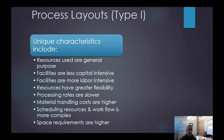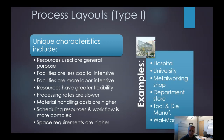The process layout, type one, has some unique characteristics. The resources are used for general purpose. The facilities are less capital intensive and more labor intensive. Resources have greater flexibility. Processing rates are slower, material handling costs are typically higher, scheduling and workflow are more complex, and space requirements are higher. Good examples include a hospital, university, metal working shop, department stores, tool and die manufacturers, and Walmart.